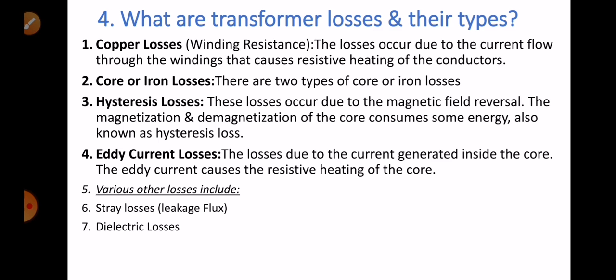Loss number two: core or iron losses. There are two types of core losses. Number one is hysteresis losses — these occur due to magnetic field reversal; the magnetization or demagnetization of the core consumes some energy. Number two is eddy current losses — these are due to currents generated inside the core. The eddy current causes resistive heating of the core. Eddy current is an undesired current which flows opposite to the actual flow, creating heat.